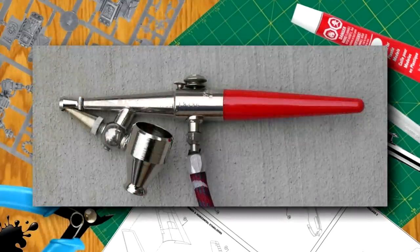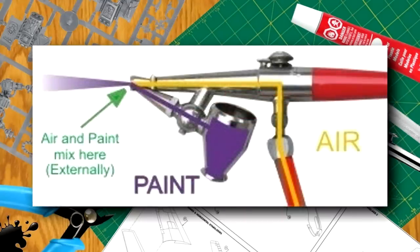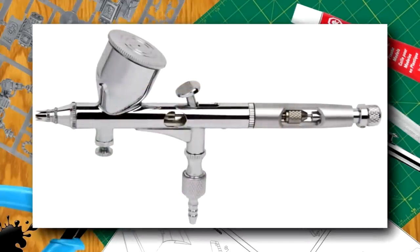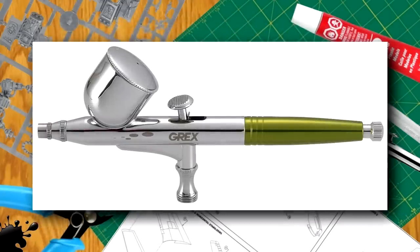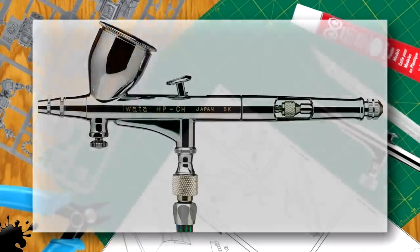Start with an inexpensive external mix gravity feed if you are just beginning to learn to airbrush. It will allow you to learn the basics of airbrush use and the proper maintenance of a very simple tool. For details and weathering, you will eventually want an internal mix airbrush. Either siphon feed or gravity feed is fine. The determining factor is the volume of paint you will be working with. For small quantities or frequent color changes, a gravity feed with a paint well may be best.